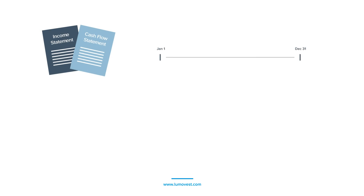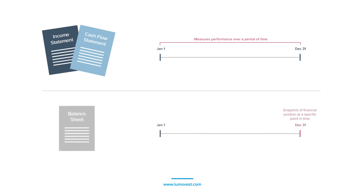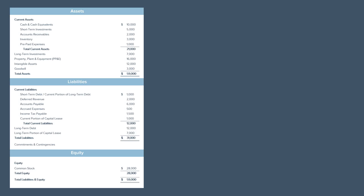Whereas the income statement and the cash flow statement show how the company has performed financially over a period of time, the balance sheet shows the financials at a specific point in time. For example, whereas the income statement and cash flow statement might show you how much money the business earned from January 1st to December 31st, the balance sheet will tell you how much assets the company has and how much liabilities it owes at the end of the day on December 31st. For this reason, some people refer to the balance sheet as a snapshot of the company's financial position. That's why the balance sheet is also known as the statement of financial position.